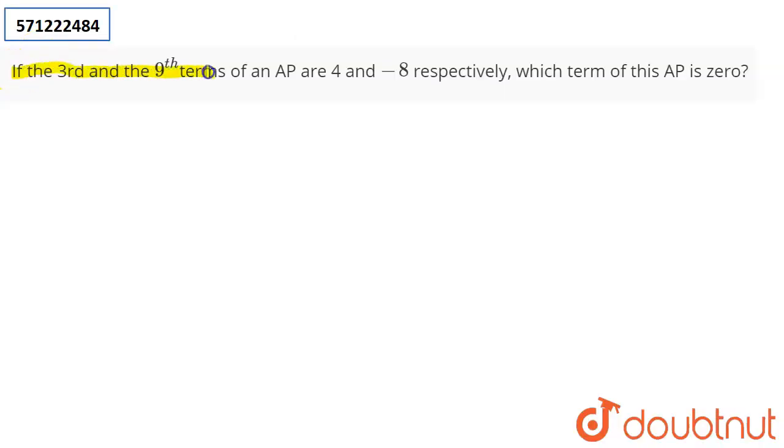if the third and ninth terms of an AP are 4 and -8 respectively, which term of this AP is 0? Alright, so let us write down a standard AP